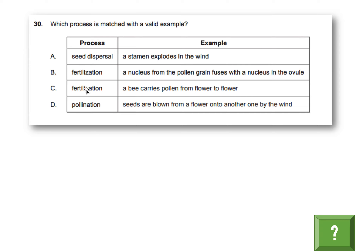Why not C? Option C also says fertilization, but the example is a bee carries pollen from flower to flower. This is not fertilization — this is pollination, the process of moving pollen from one flower to another. Why not D? Option D says pollination, but the example is seeds are blown from a flower onto another by wind — that's seed dispersal, not pollination. So the answer is B.